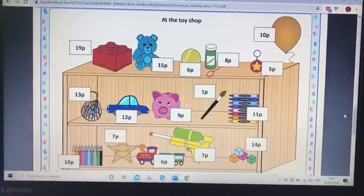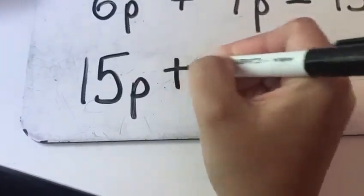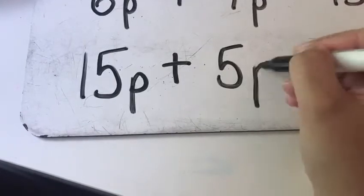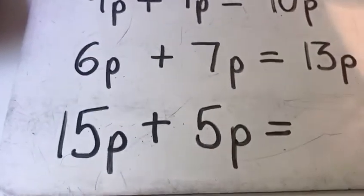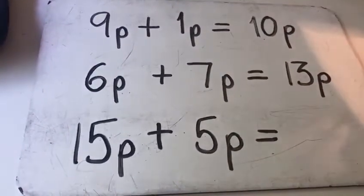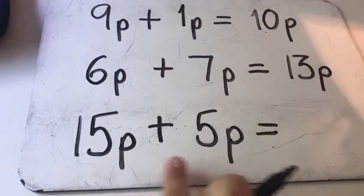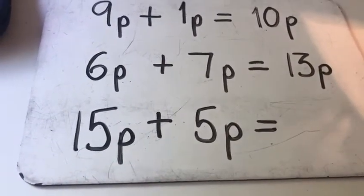So my number sentence will be say it with me 15p plus 5p. Okay which skill am I going to be using here year 1? Do you spot anything in this equation to help me?